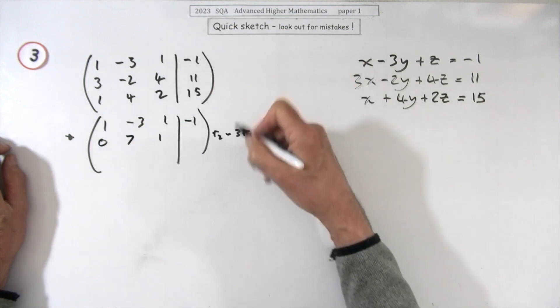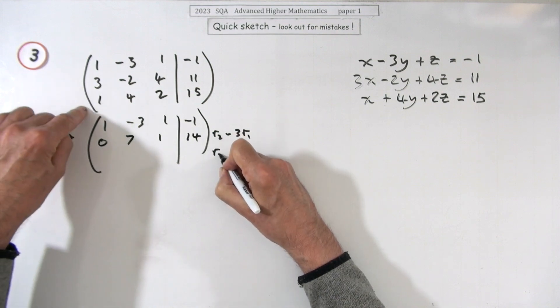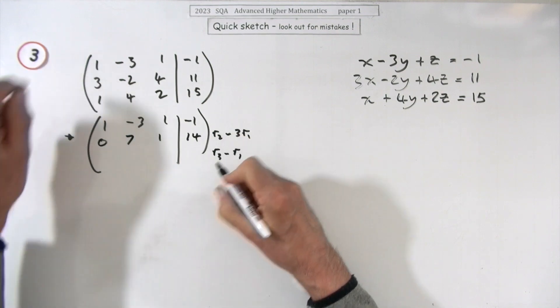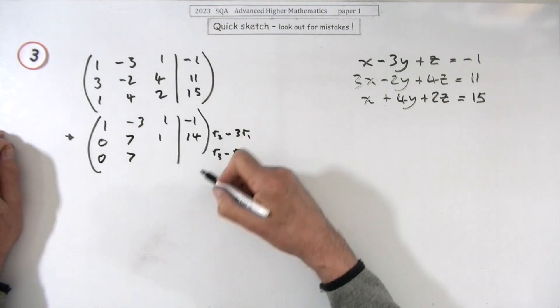That'll be row three, take away just row one would do it. One take away one is zero, four minus two goes up to seven—that's very handy for the next stage. Two take away one is one.